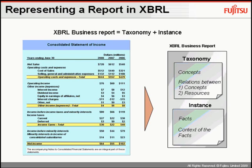There are two key documents in XBRL. The first is what we call the taxonomy, which is basically created by regulators such as the SEC. The second one is what we term the instance document, and that's created by the regulated entity — the company reporting to the SEC, such as a listed company.